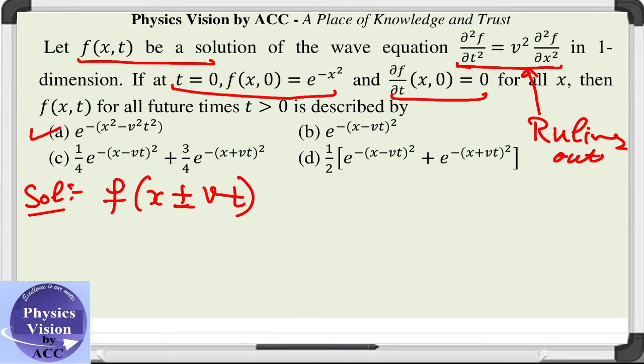So the first option cannot be correct. So first option can be cancelled out, ruled out that it is not possible. This is not the appropriate form we want or we know that exists for the wave equation solution.